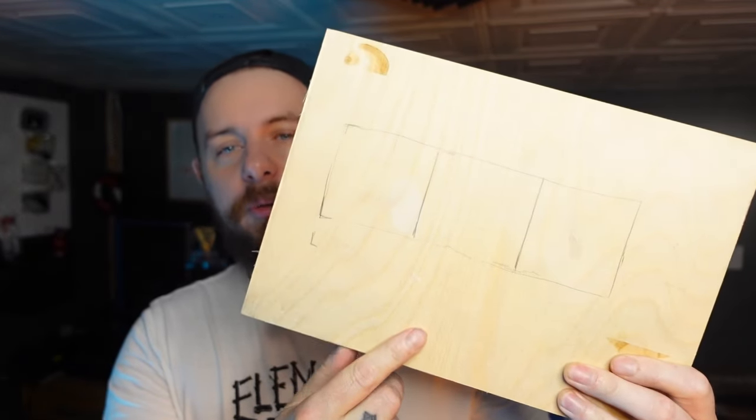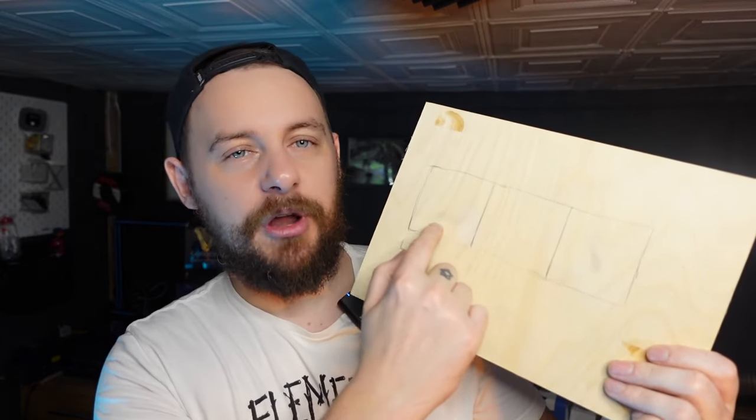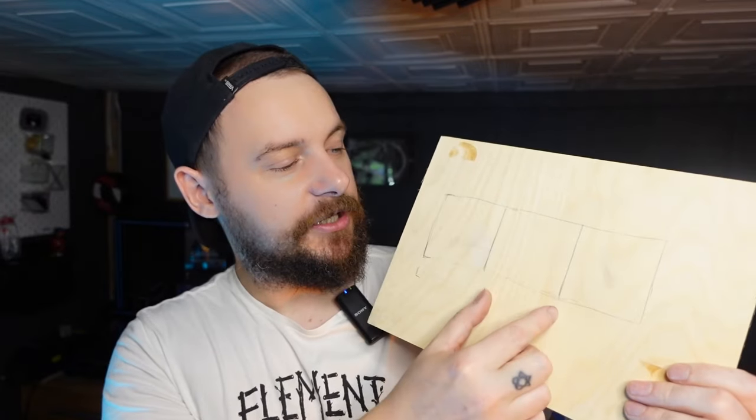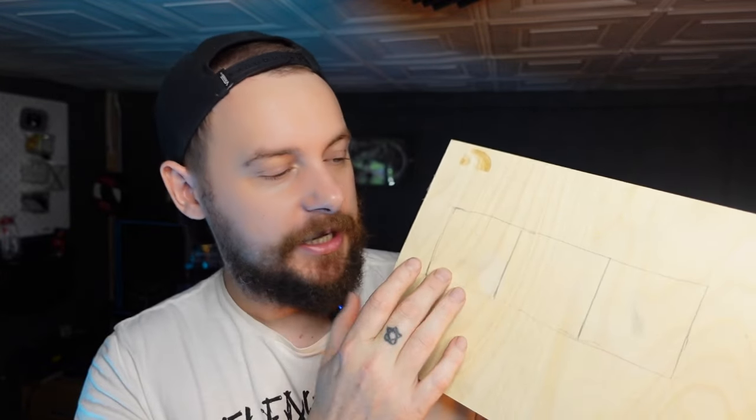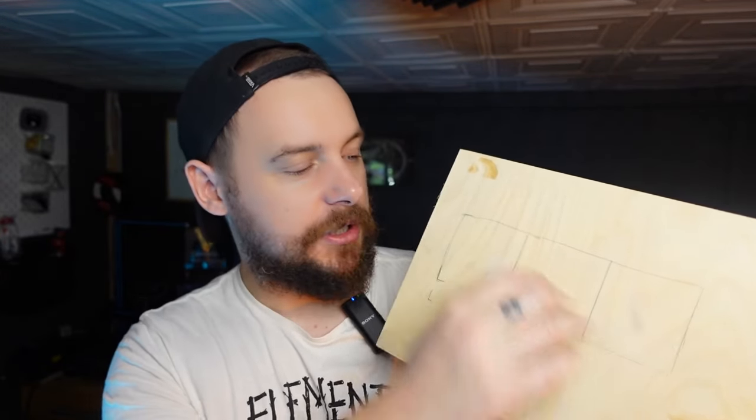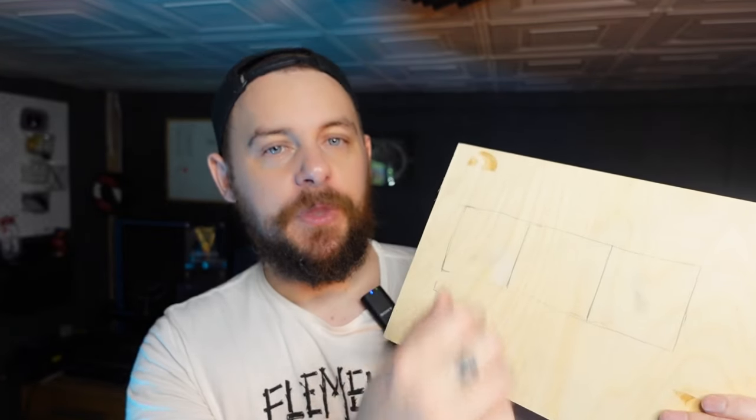I've got a scrap piece of birch plywood here. I've got the same image I'm going to engrave three times across this. I'm going to use the center square as just our test with no borax or baking powder at all. On the left I'll do borax, and then on the right I'll do baking powder. So we'll mask them off, paint them on, and then we'll put it in the laser.